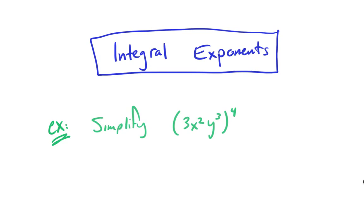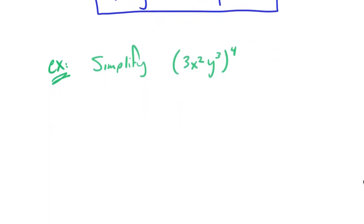We'll start with this one in green. It's just a simplification problem. The main thing going on here is we have this exponent on the outside, this 4, and it's supposed to apply to everything on the inside of these parentheses.